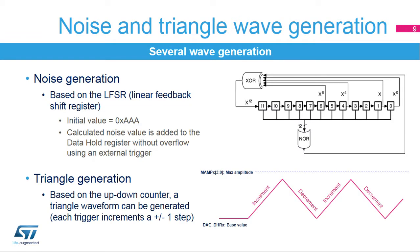The DAC digital interface integrates two special signal generators. The linear feedback shift register (LFSR) can create the noise signal for the DAC input. Each trigger updates the DAC output data by an LFSR block. The up-down counter with a programmable count value can create triangle wave data, which can update the DAC output data. The data can also be updated by a trigger signal.